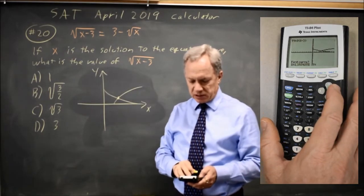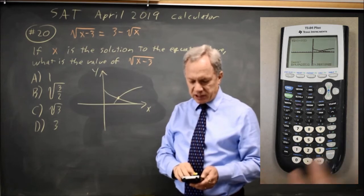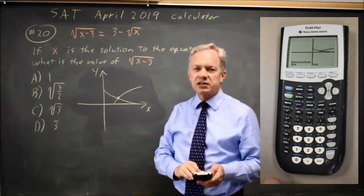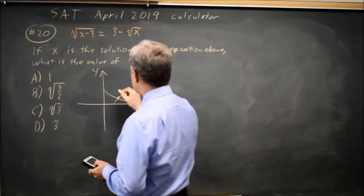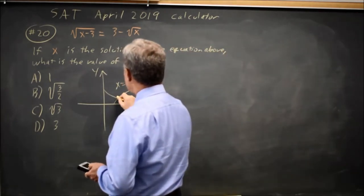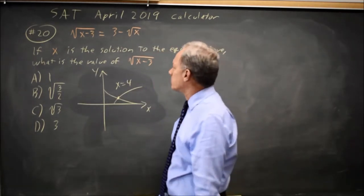So I use second calc, choice 5 is intersect. I have to scroll right to be on the equation, and then I hit enter three times, and it says x equals 4. The x-coordinate at the point of intersection is the solution to this equation. It only has one variable.